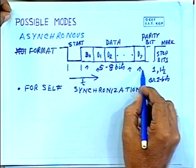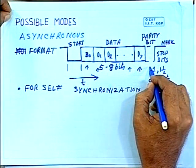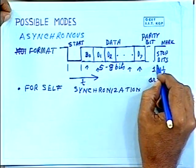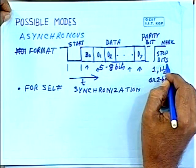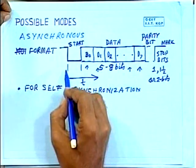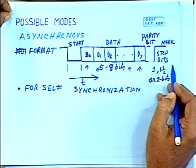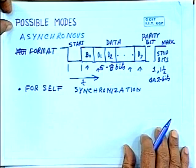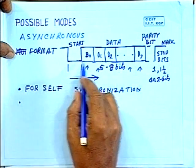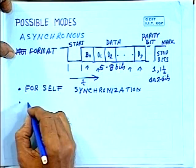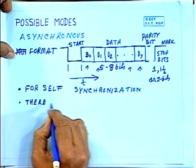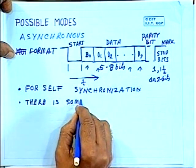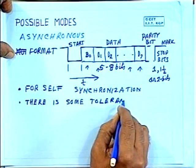In this way, it will receive 7 bits, and for error detection, the parity bit is used. Then it receives the stop bits, and after that the full character is received. After that, data may not be sent for some duration, and whenever another character is sent, it begins again with the start bit. Each character is synchronized with the help of a start bit — that is why it is called self-synchronizing. In asynchronous mode, there is some tolerance in clock frequency.